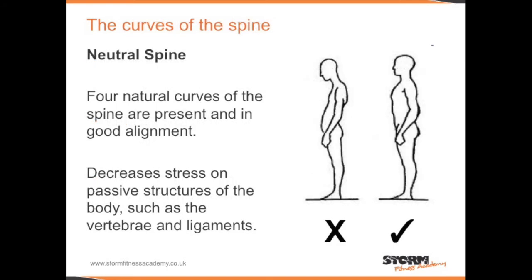The spine has 4 natural curves. When all 4 natural curves of the spine are present and in good alignment, we refer to this as a neutral spine. A neutral spine decreases stress on all the passive structures of the body, such as the vertebrae and ligaments.